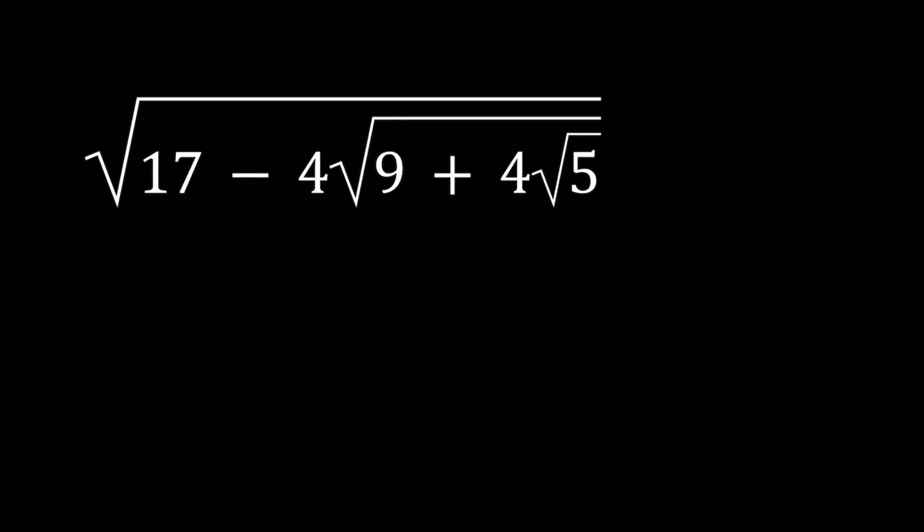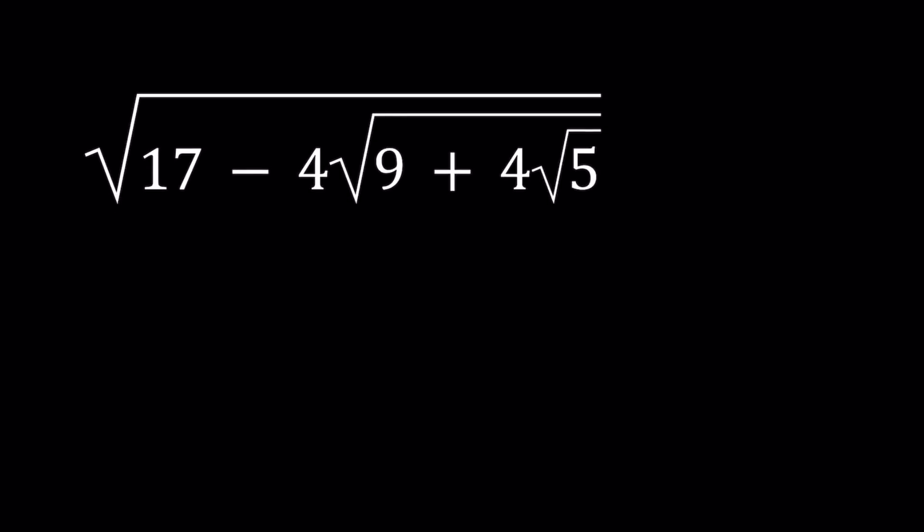In this video, we're going to be simplifying a radical expression. It's kind of like a nested radical, but it's not one of those infinite ones that we've seen before, and the numbers are kind of different. We have the square root of 17 minus 4 times the square root of 9 plus 4 times the square root of 5. We're going to write this in the simplest form using radicals.